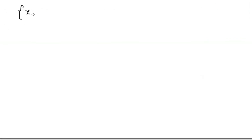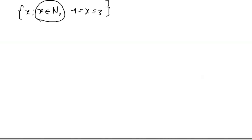For the next activity, we are going to state the number of elements in the set. This is a set builder: x is such that x is an element of natural numbers, and x is greater than or equal to negative 4 but less than or equal to 3. Our focus is on natural numbers, which start from 1. Since it says equal to 3, we stop at 3 — so that tells me I have 3 elements.